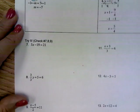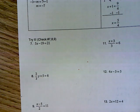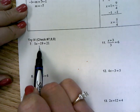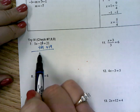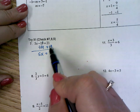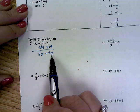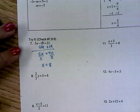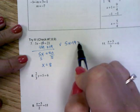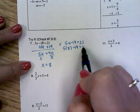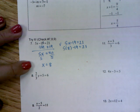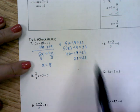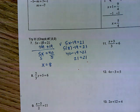On number 7, it says 5x minus 19 equals 21. I'm going to add or subtract first, so because I've got minus 19, I add 19 to both sides. My 5x comes down because I've done nothing with it. 21 plus 19 is 40. Now I have a multiplication equation, so I divide both sides by 5, and x equals 8. To check: I write my original equation 5x minus 19 equals 21, plug in 8, and because I'm solving the numerical expression I follow order of operations. When you're solving, you do order of operations backwards; when you're checking, you do it forwards.